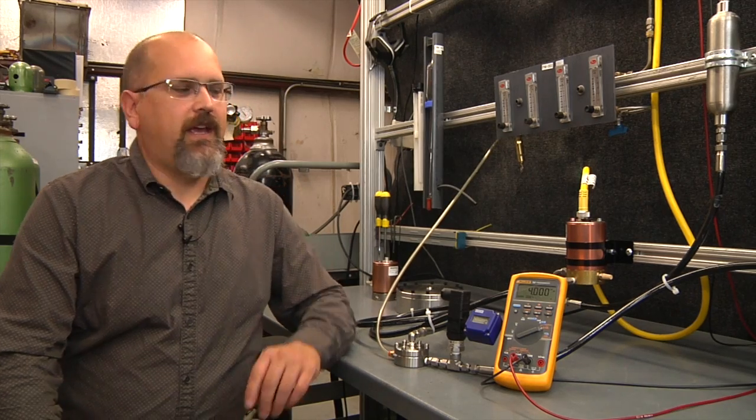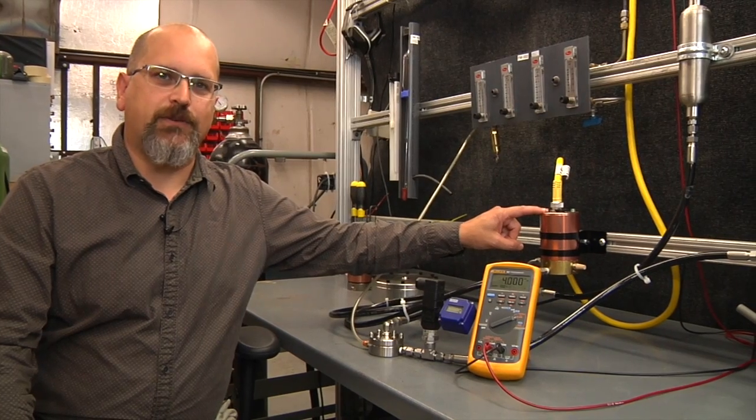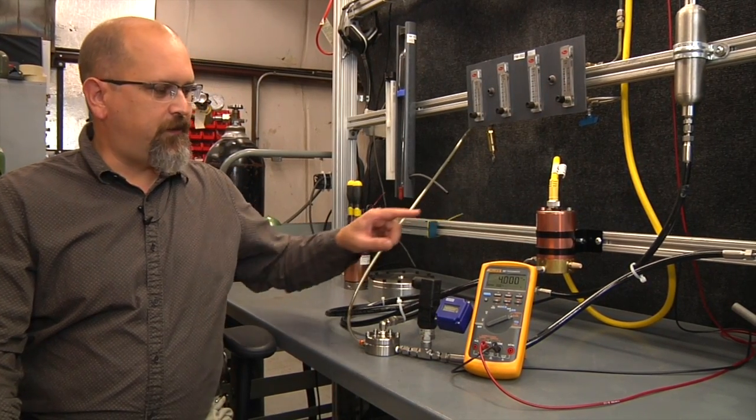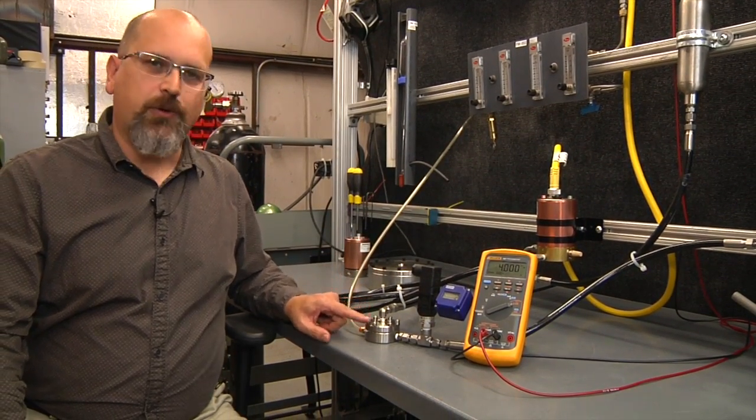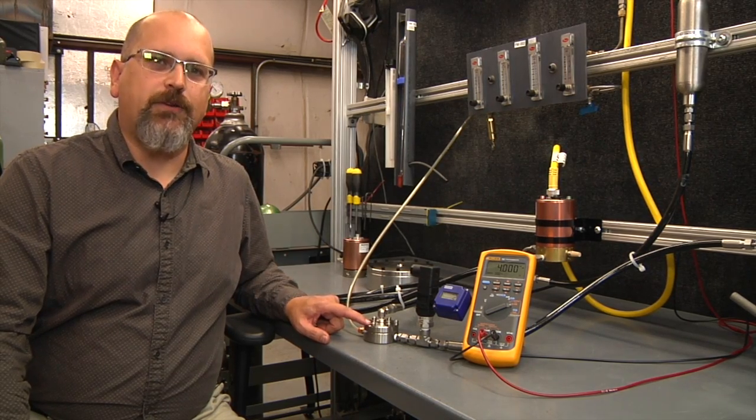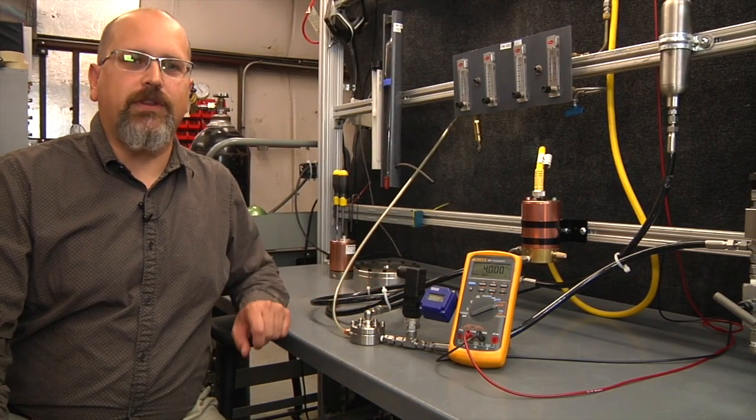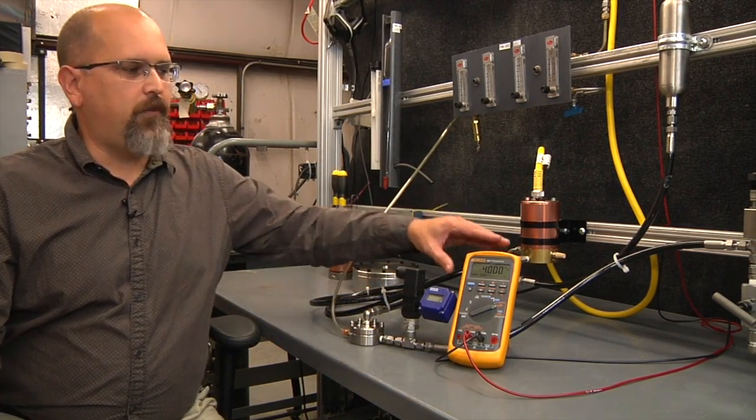I'm David Reed with Equilibar, and today I'm going to demonstrate how a Proportion Air GX Series electronic pressure regulator can be used to provide a pilot signal to an Equilibar precision back pressure regulator, which will allow you to control the back pressure in your process from 0 to 1000 PSI by using an electronic command signal.